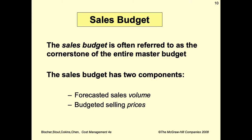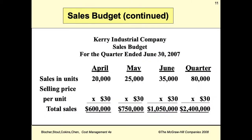The sales budget is often referred to as the cornerstone of the entire master budget. It has two components: forecasted sales volume and budgeted selling prices. In the example for Carrie Industrial Company, the sales budget for the quarter ended June 30, 2007 shows sales in units multiplied by selling price per unit to give total sales. The quarter is the total of April, May, and June.